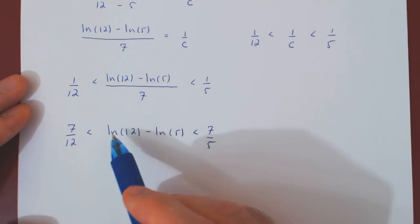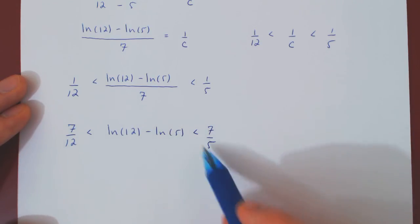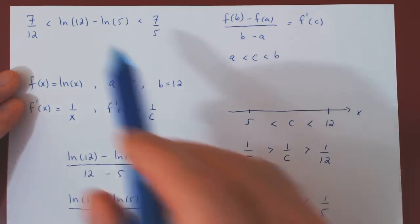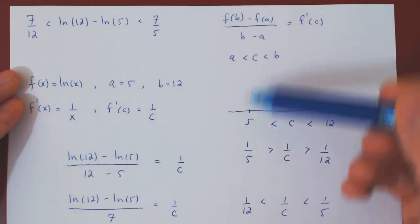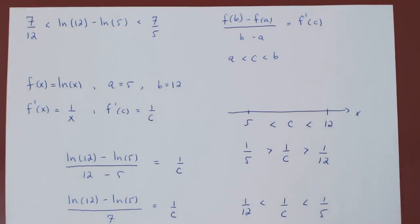So, the conclusion is that ln of 12 minus ln of 5 is larger than 7 on 12, but smaller than 7 on 5. And if we go back up, this was exactly what we hoped to prove, using, of course, the mean value theorem. And that's it.